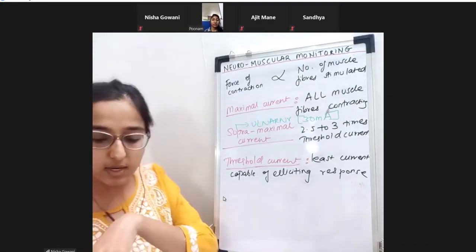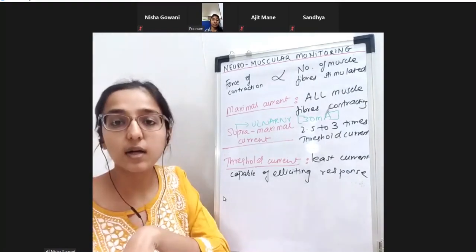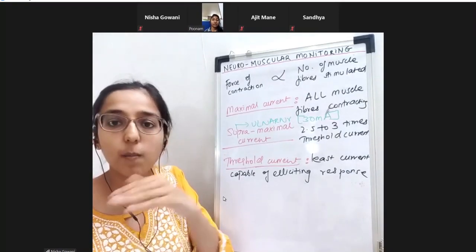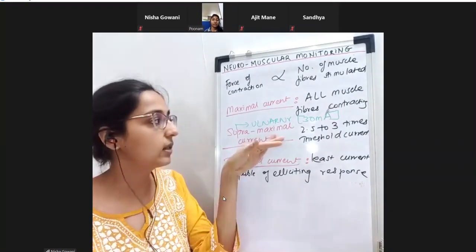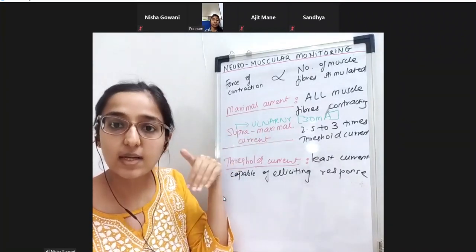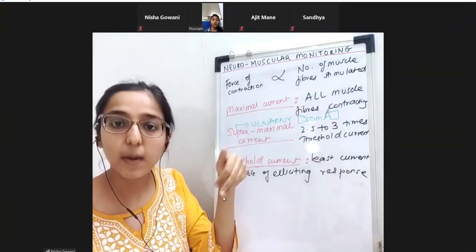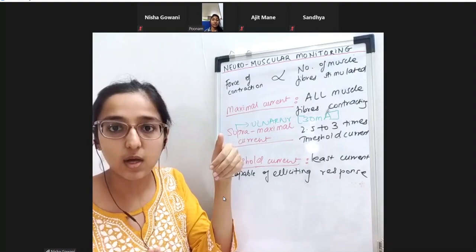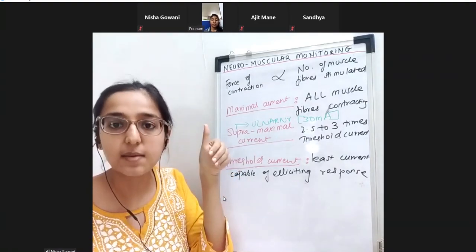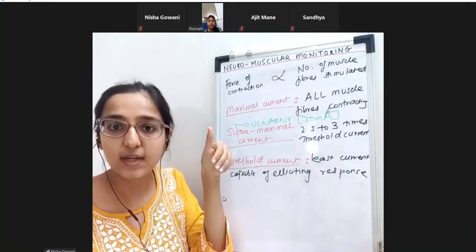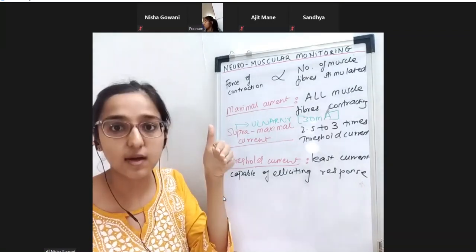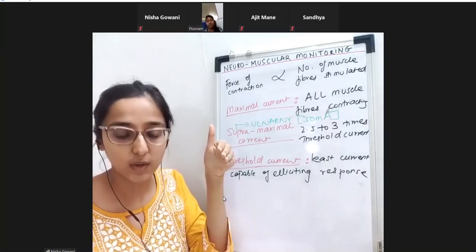When will you need a higher current? Some patients might need above 30 mA - these are patients who have generalized edema or diabetes mellitus, who need a little higher current.